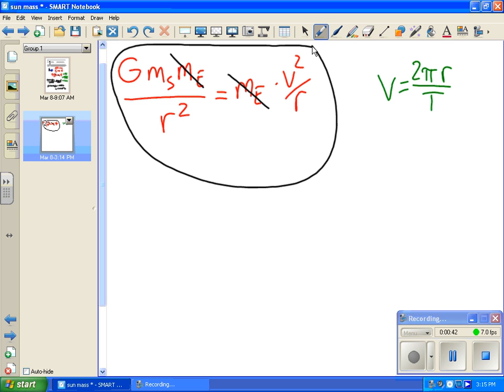But the acceleration of the Earth is approximately centripetal, and I know that the speed of the Earth is 2 pi times radius over period, keeping in mind that this path is approximately circular.